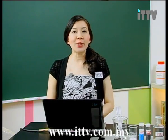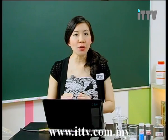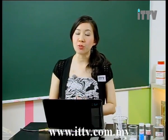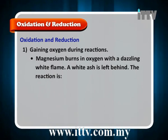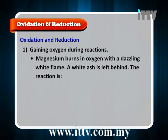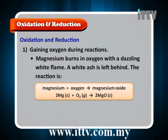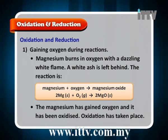For the first slide, let us look at the first definition, which is in terms of gaining oxygen during a reaction. Magnesium burns in oxygen with a dazzling white flame, and a white ash is left behind. The reaction is magnesium reacts with oxygen to produce magnesium oxide. The magnesium has gained oxygen and it has been oxidized.